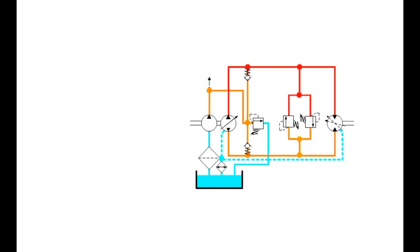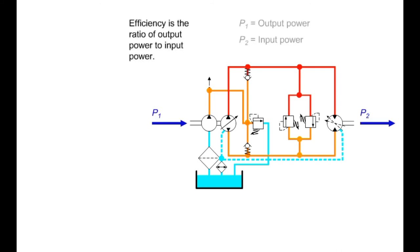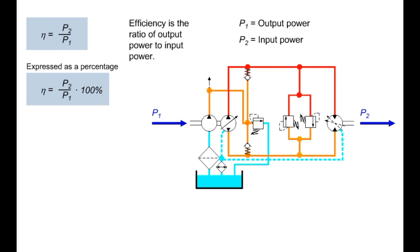A characteristic variable for a hydraulic system is its efficiency. Efficiency is generally the ratio of output to input — that is, the ratio of output power to input power. The symbol for efficiency is the Greek letter eta. Efficiency eta equals output power divided by input power, and is also commonly expressed as a percentage. Efficiency is always less than 1, meaning output power is less than input power, because loss occurs in every technical system. In a hydraulic system, both mechanical and volumetric losses occur, giving a mechanical efficiency eta-mechanical and a volumetric efficiency eta-volumetric.